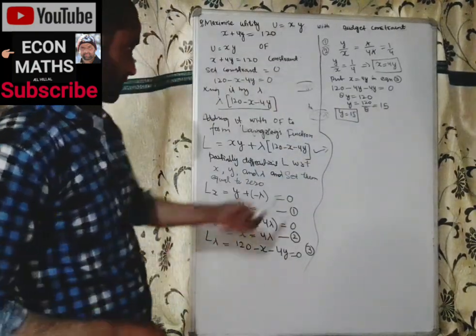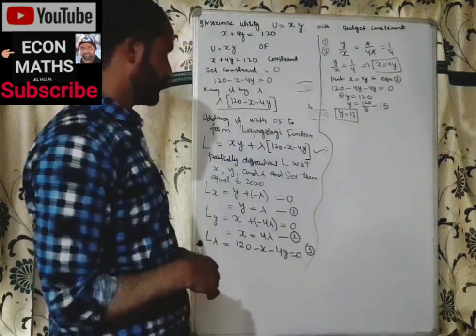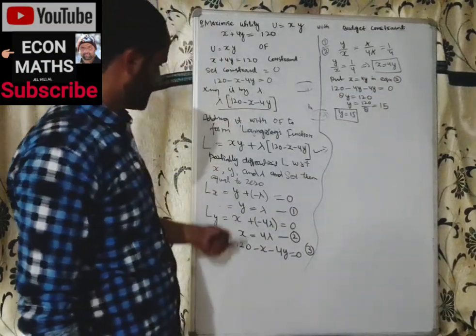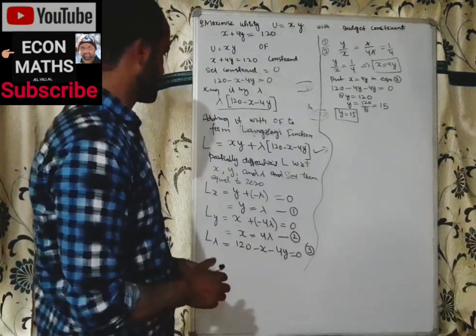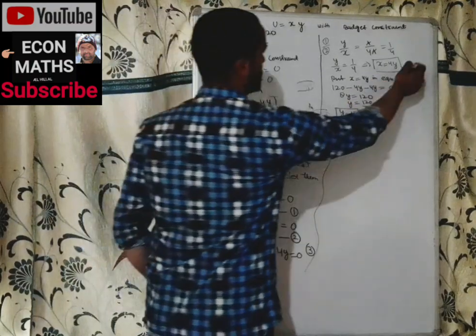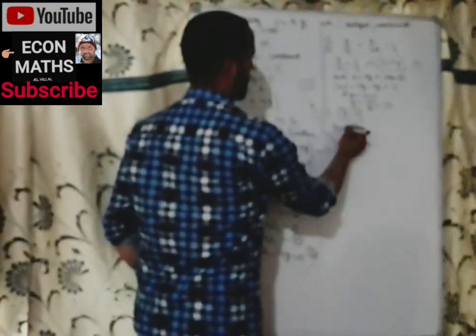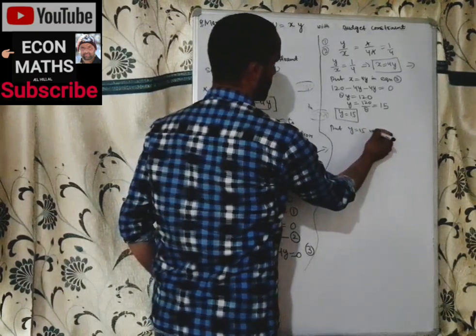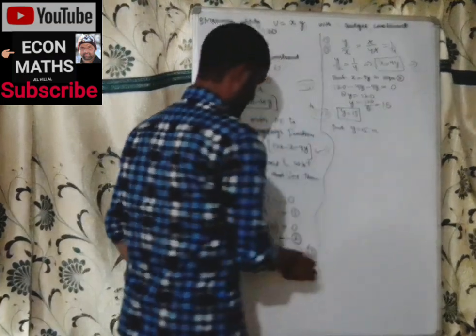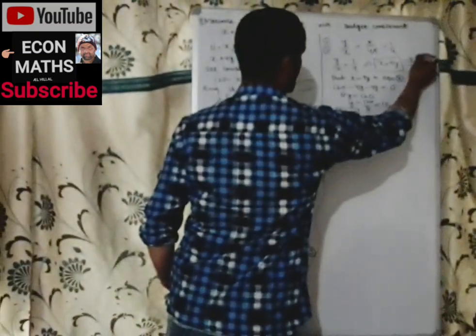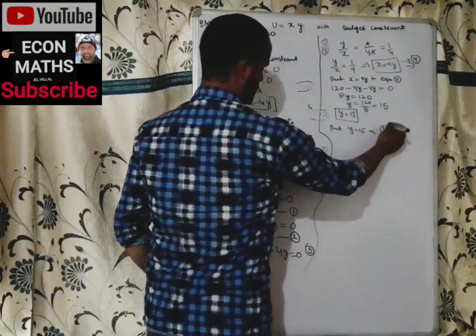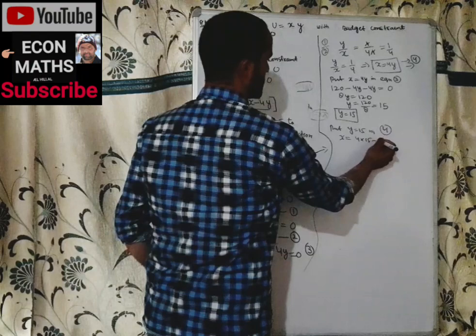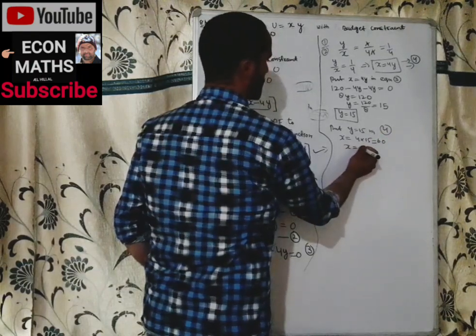Now that y = 15, we find x by substituting into x = 4y. So x = 4 × 15 = 60. We have obtained the optimal values x = 60 and y = 15.